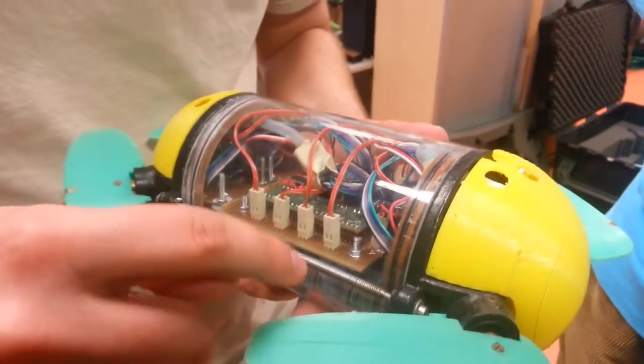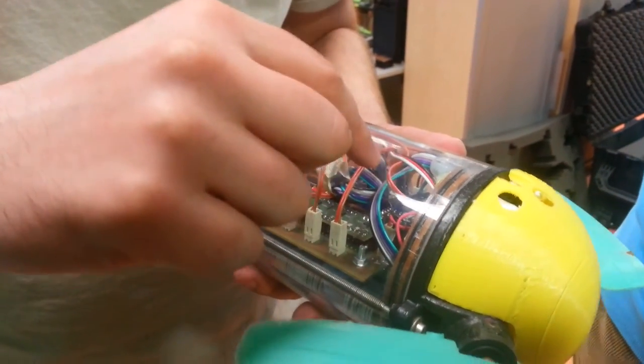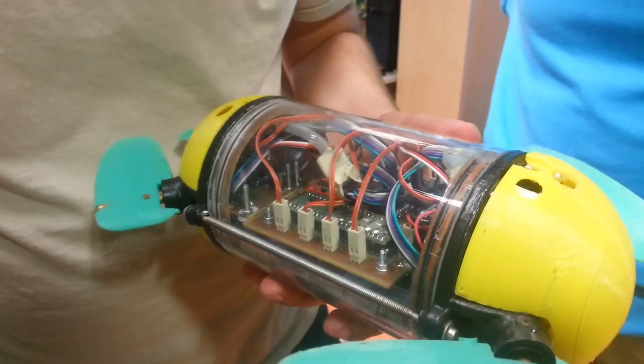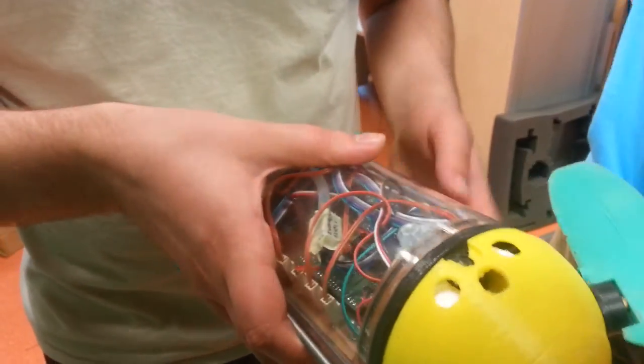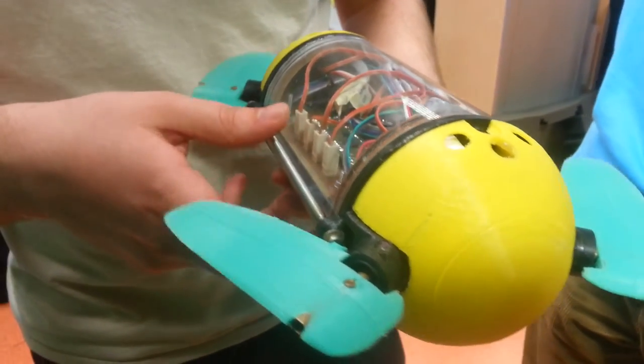And then just the exact same IMU that we are using on our robots. And then we have this Arduino. Mini, I guess.